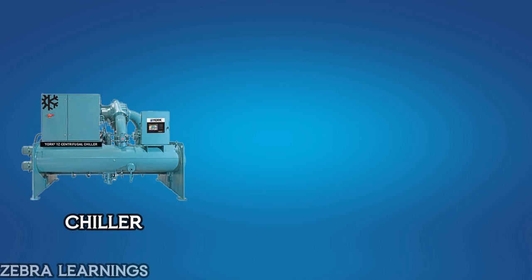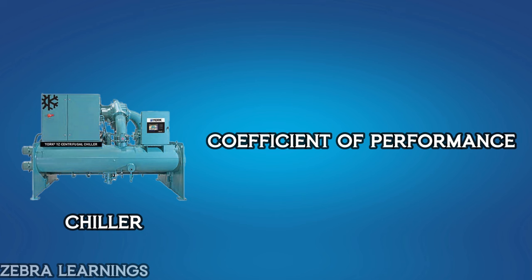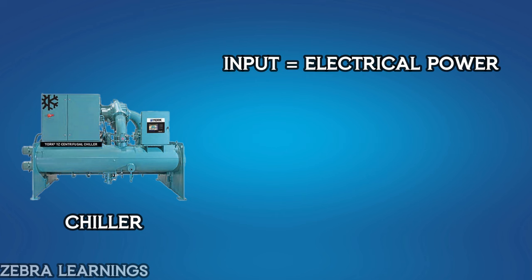Efficiency of a chiller is similar. As we say mileage for a motorbike, we say coefficient of performance, or COP, for a chiller. When we put petrol as input in a motorbike, the output we get is how much distance it can travel. Similarly, the input we give to a chiller is electric power, and the output we get is cooling.